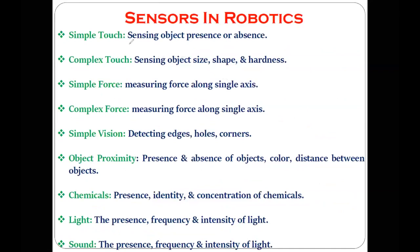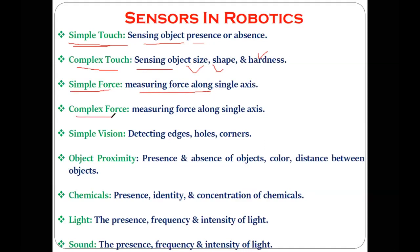There are different kinds of sensors available. Simple touch sensors can tell whether an object is present or absent, while complex touch sensors give you the idea about the size, shape, and hardness of the object. Simple force sensors measure force along a single axis, while complex force sensors can measure force along multiple axes.